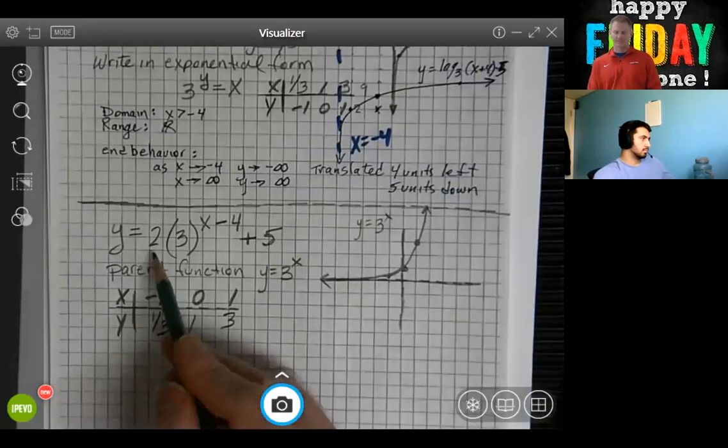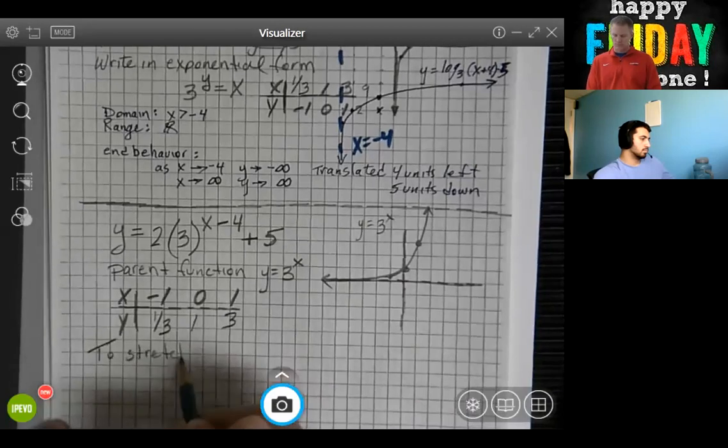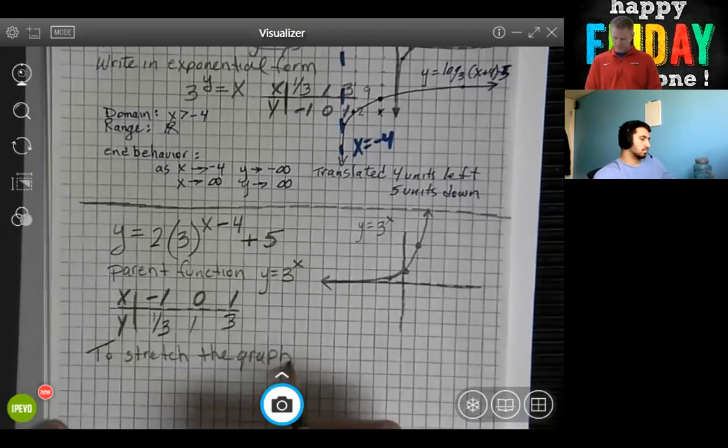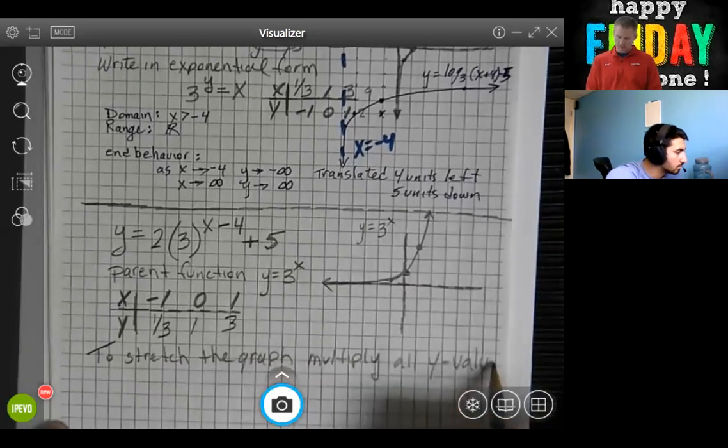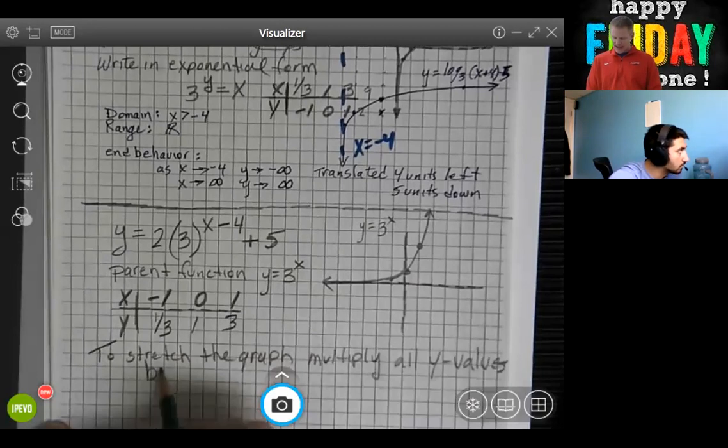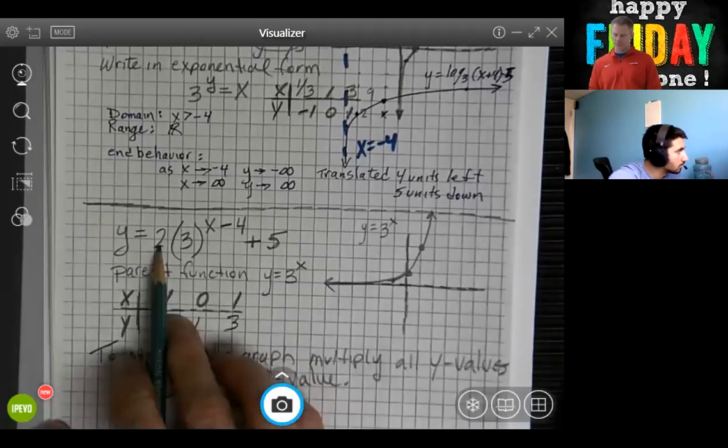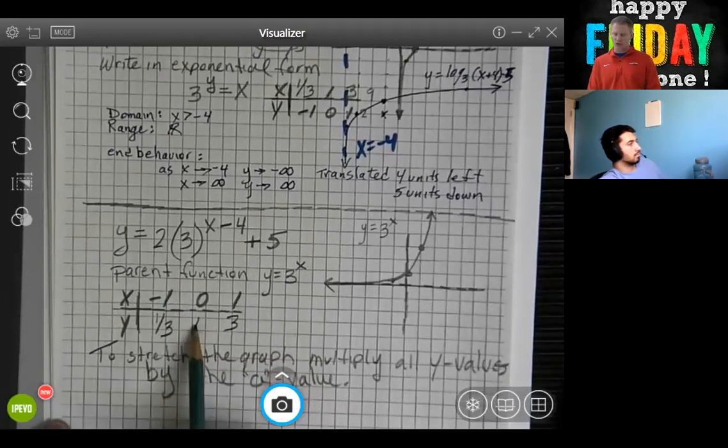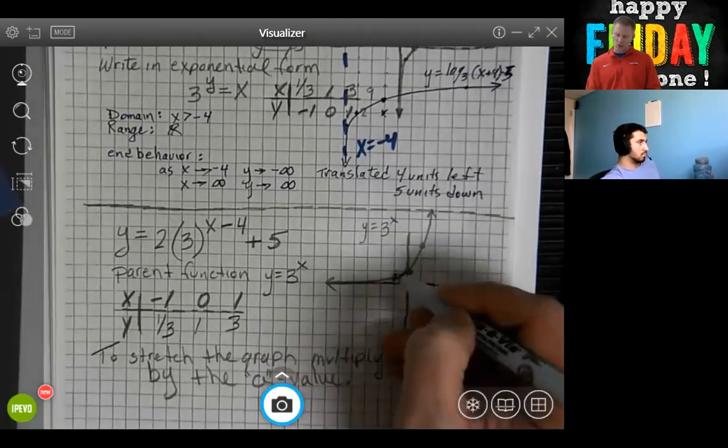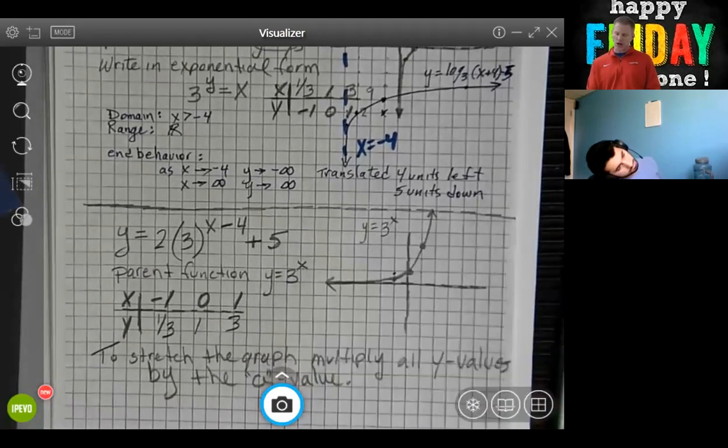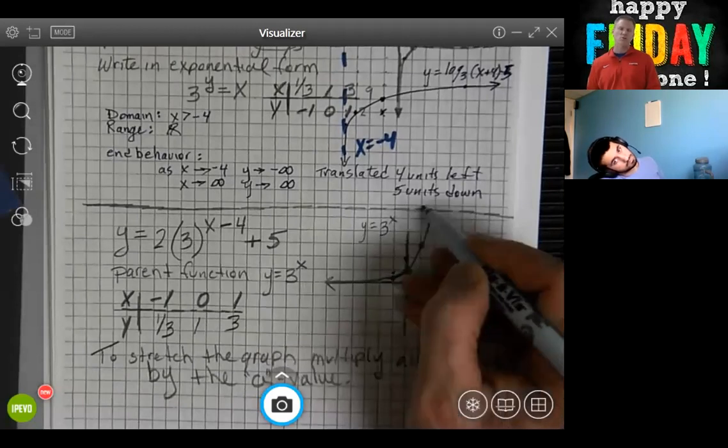Now we're going to stretch it. To stretch the graph, multiply all y values by the a value. So our a value is 2. So we're going to multiply all of our y's by 2. Instead of being up at 1 third, we're now going to be 2 thirds. That's twice as big. Instead of being at 1, we're going to be at 2 because that's twice as big. Instead of being at 3, we're going to be at 6. That's twice as big.